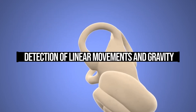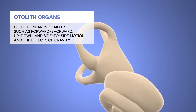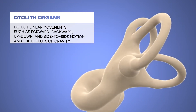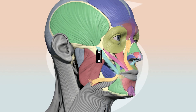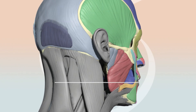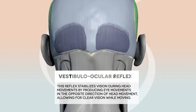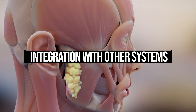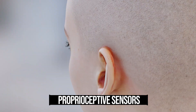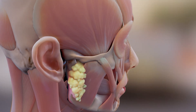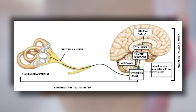The otolith organs — the utricle and saccule — detect linear movements such as forward-backward, up-down, and side-to-side motion, as well as the effects of gravity, aiding in balance and posture. The vestibulo-ocular reflex stabilizes vision during head movements by producing eye movements in the opposite direction of head movement, allowing for clear vision while moving. The vestibular system also works closely with the visual system and proprioceptive sensors in the body, sending information to the brainstem, cerebellum, and other brain areas to coordinate movement and balance.